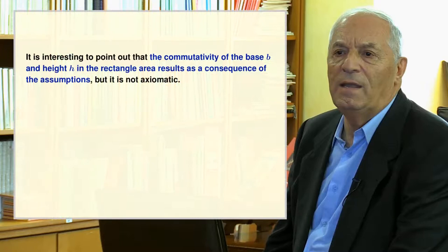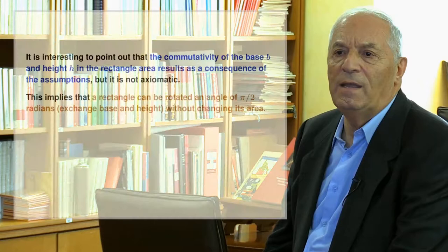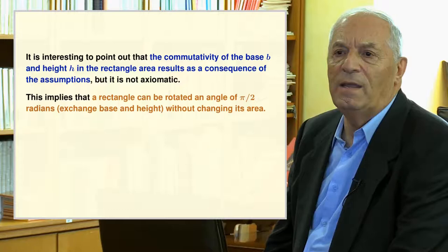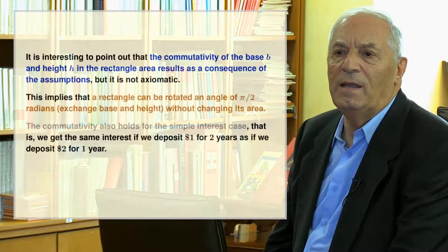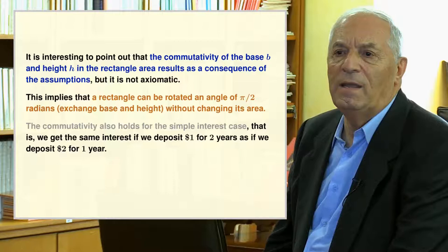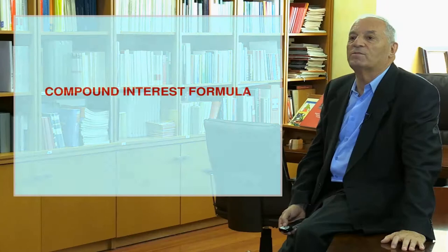It is interesting to point out that the commutativity of base b and height h in the rectangle area results as a consequence of the assumptions, not as an axiom. This implies that a rectangle can be rotated by pi divided by two radians, exchanging base and height, without changing its area. The commutativity also holds for the simple interest case: we get the same interest if we deposit one dollar for two years as if we deposit two dollars for one year.